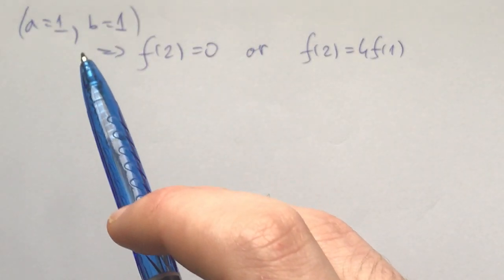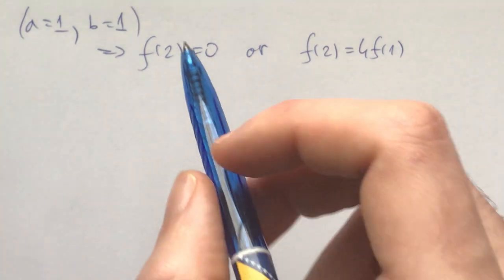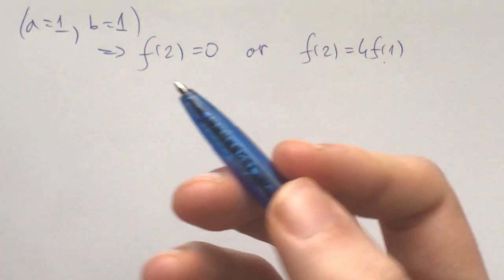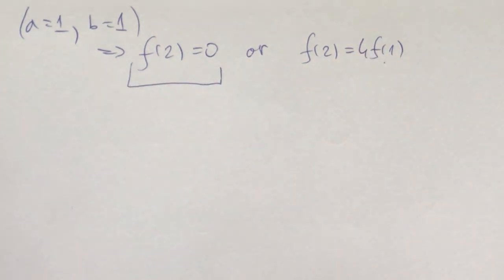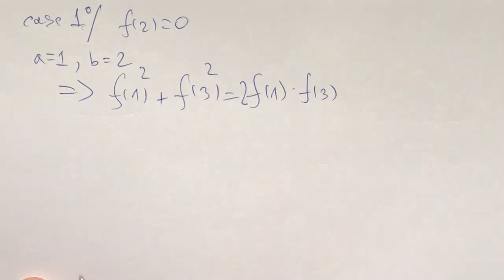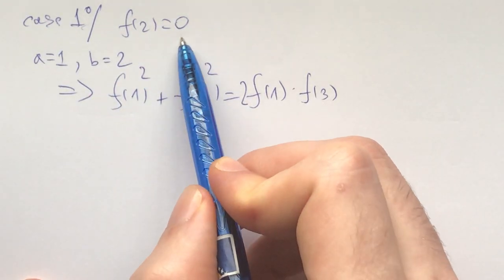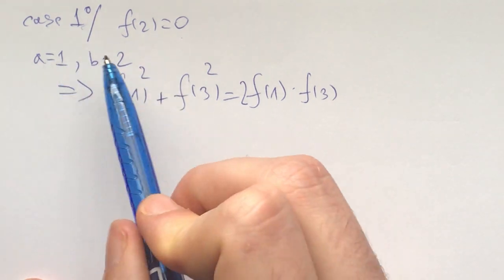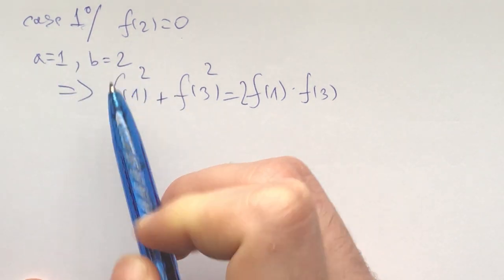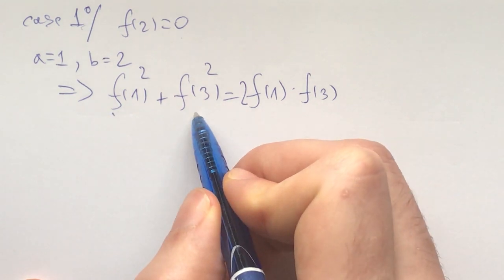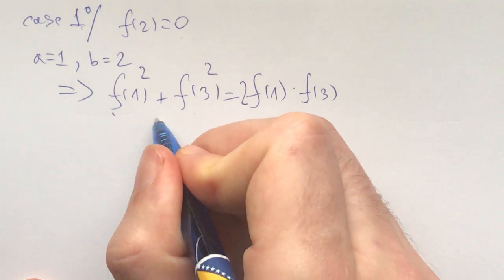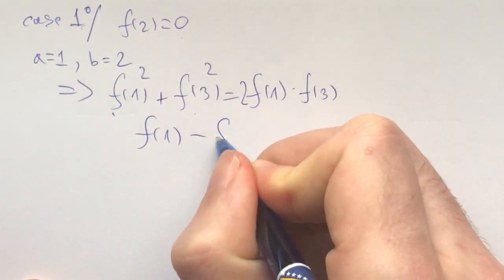If I plug in a = b = 1, I get f(2) is either 0 or 4·f(1). These are two cases, so let me first take care of the easier-looking case. For the case f(2) = 0, the immediate thing is to plug in a = 1, b = 2, and f(2) = 0 cancels a lot of stuff out.